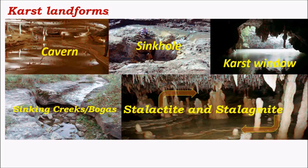Finally, karst landforms are those formed by erosional processes in limestone sediments. Stalactites and stalagmites are important examples of depositional karst landforms, whereas others are erosional in nature. A karst window is a cave-like structure formed due to differential erosion, and the bigger version of a karst window is called a cavern.